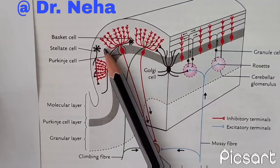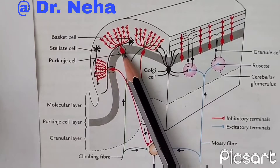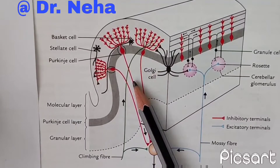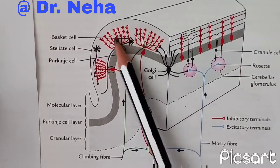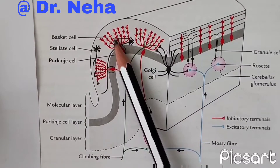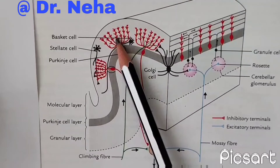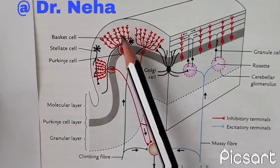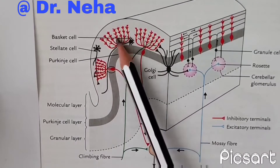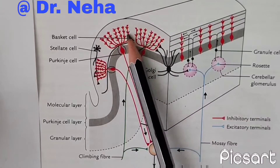The outermost is the molecular layer, also known as the plexiform layer. In the middle we have the Purkinje cell layer. The molecular layer is the superficial layer and it consists of the numerous dendritic arborization of the Purkinje cells. Here we can see these Purkinje cells lying next to the molecular layer; their dendrites ramify in this molecular layer.